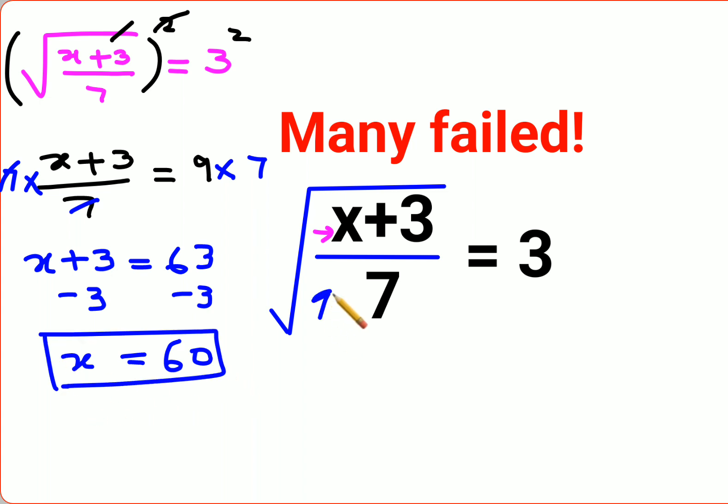So now let's put it over here. We have, instead of x, we will put 60 plus 3 upon 7 under a root. So this becomes 63 upon 7 under a root. So now this is 9. Root of 9. Root of a positive number is always positive, which is just 3. And that is your RHS.